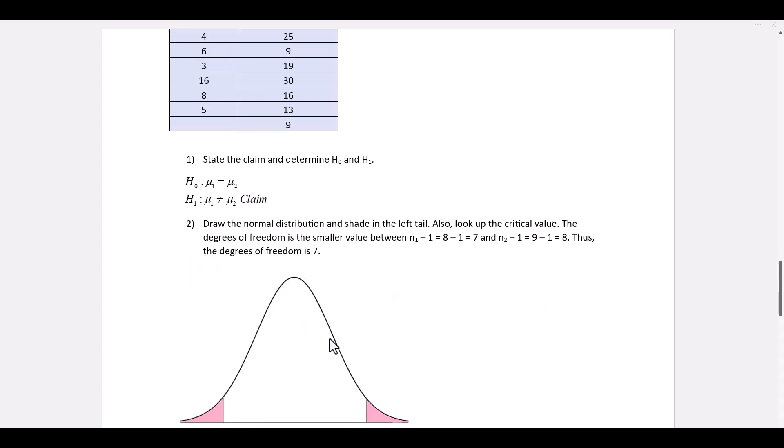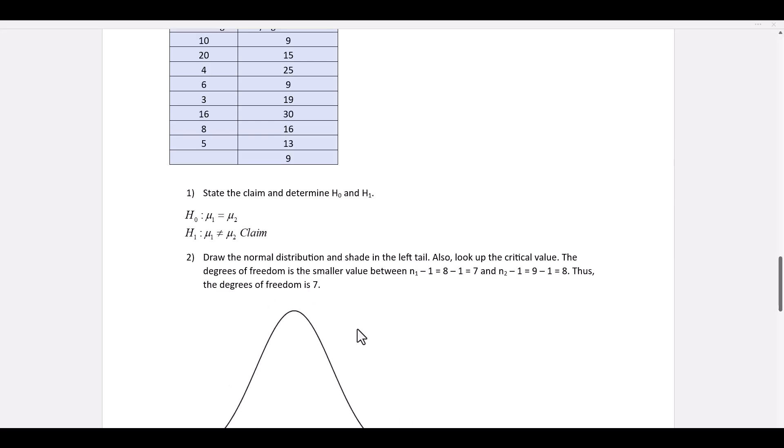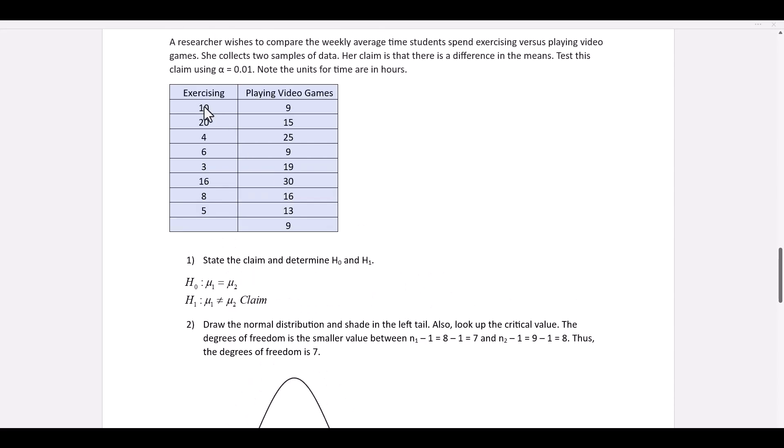Now, since the population standard deviations are not given, this is a t-test. So we have to calculate n sub 1 minus 1, which is the number of data values. So there's 8 for the first sample, 8 minus 1 is 7.